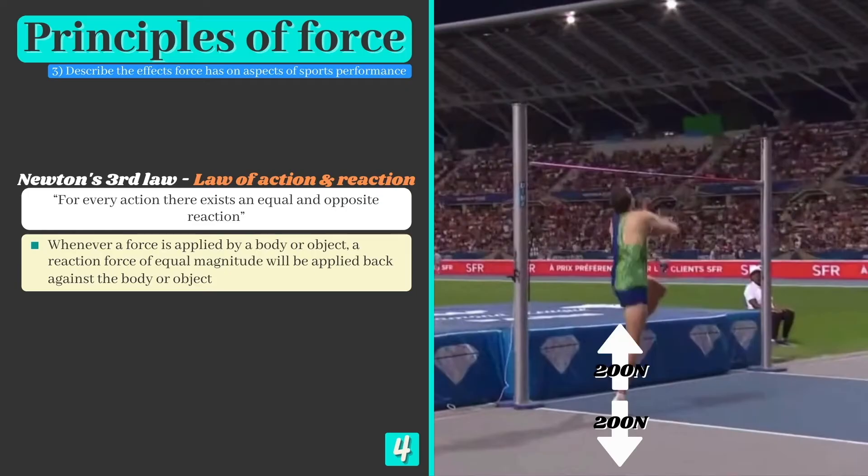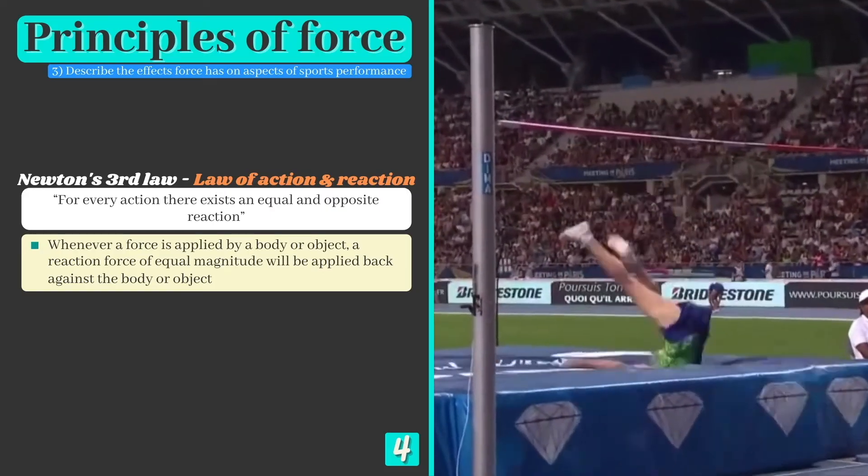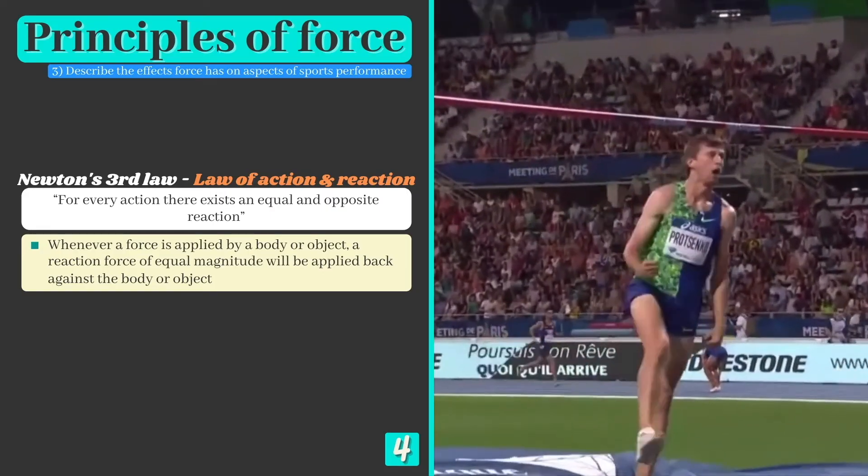if a high jumper applies a force of 200 newtons against the ground at takeoff, a reaction force of 200 newtons will be applied back against the high jumper in exactly the opposite direction. This ground reaction force is actually what's responsible for propelling their body into the air so that they can gain the height needed to clear the bar.